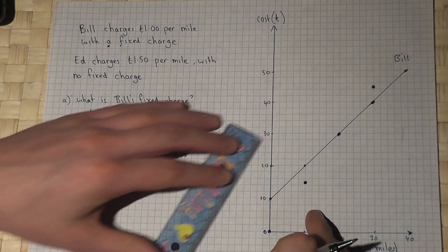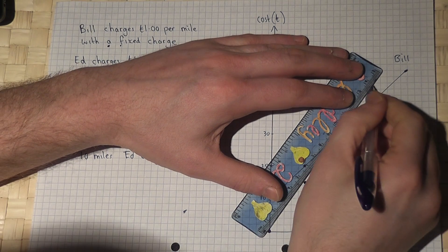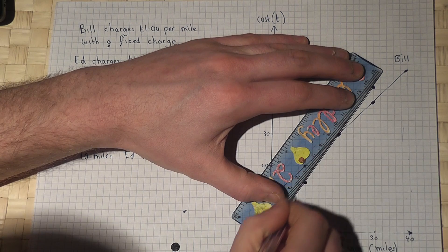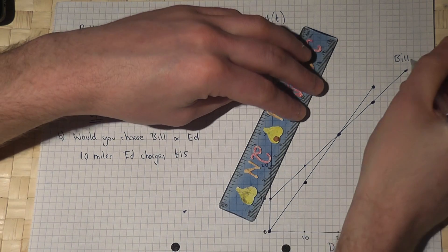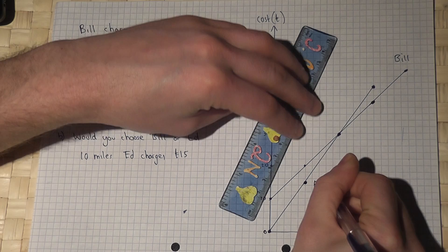If I draw a line through these dots, then I can compare the two graphs. That was Bill, and this is Ed.